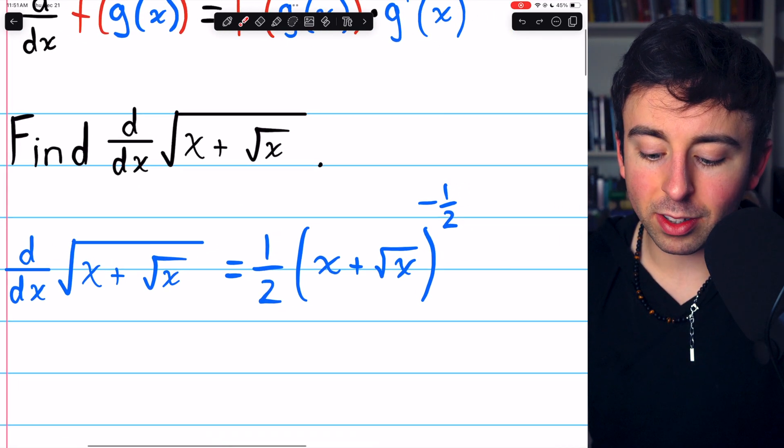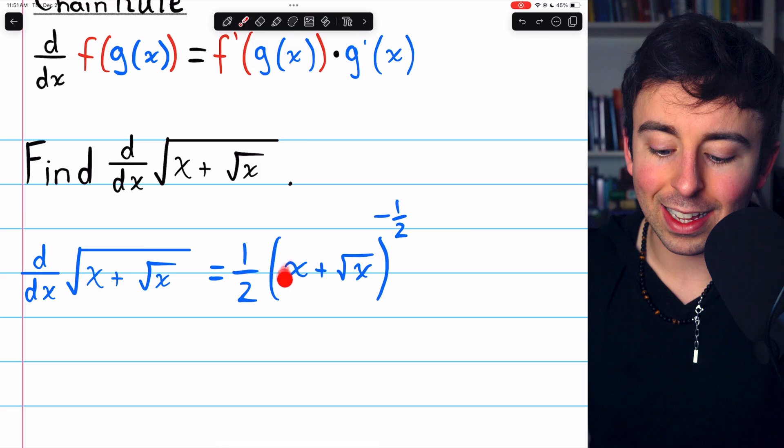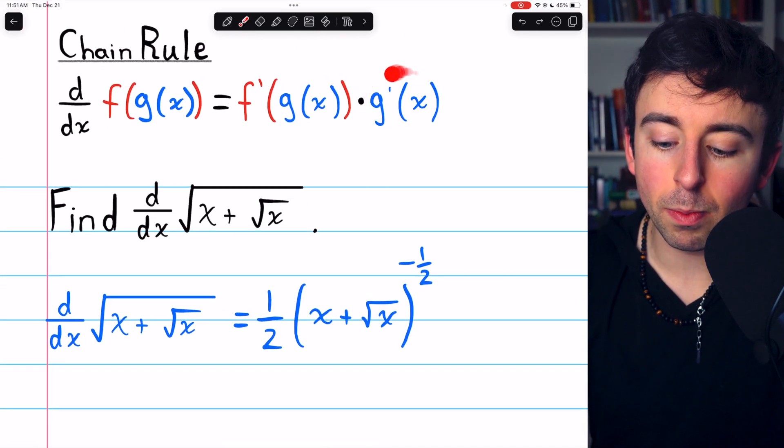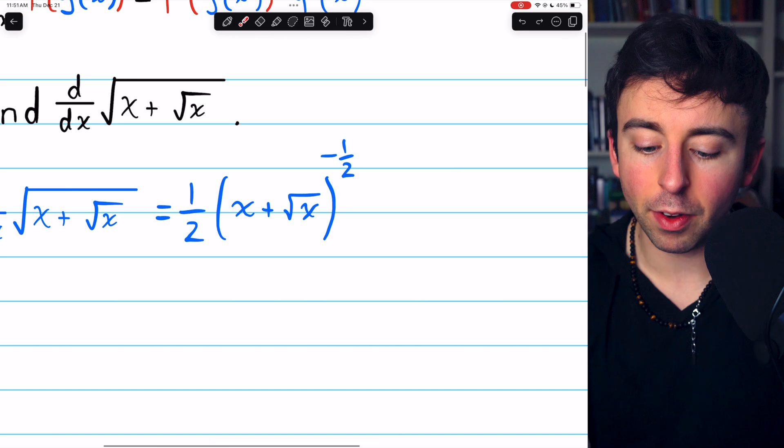We still have more work to do though, because there is a function inside of this, and so by the chain rule, we need to multiply by the derivative of that function.